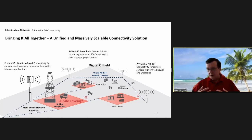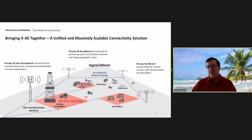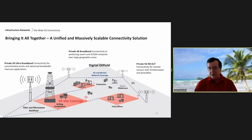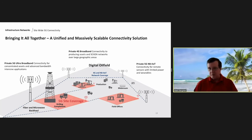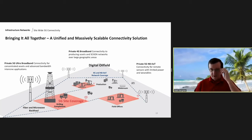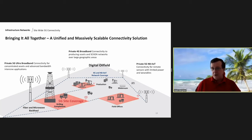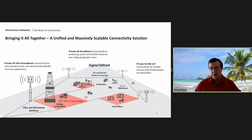Bringing it all together, INET's 4G/5G-capable network will have three manifestations: the private 4G broadband connectivity to manage producing assets and SCADA networks over large geographic areas; ultra-broadband gigabit speeds on a local basis through small cell backhauled across our network; and a private 5G narrowband that can scale across millions of sensor devices. We think this ends up being a future-proof network that takes the industry through a digital transformation of its field operations.